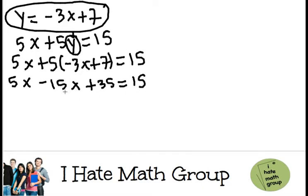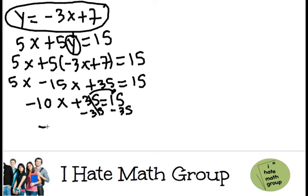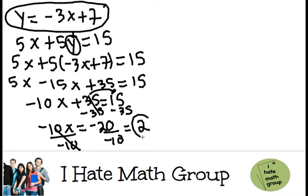Now I can go ahead and solve for x. 5x minus 15x is negative 10x plus 35 equals 15. Now let's pass this 35 to the other side. So I do minus 35, minus 35. Negative 10x equals 15. 15 minus 35 is negative 20. And finally, I get that x is negative 20 over negative 10, which equals positive 2.